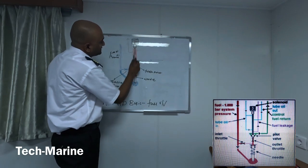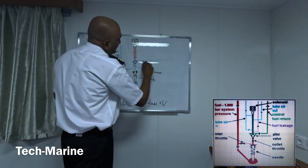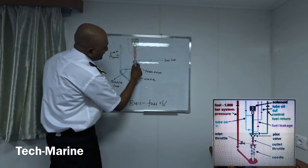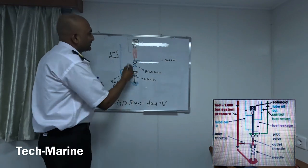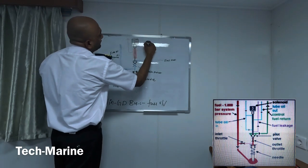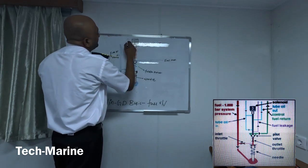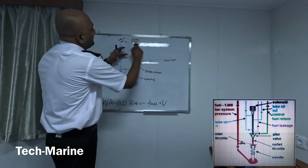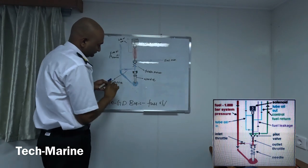Once the solenoid valve activates, the ball moves upward and the fuel is drained out - fuel out. When the fuel is drained from the top of the needle, the needle valve lifts and the fuel is injected. The red color line is the lube oil line - lube oil in and lube oil out - which is used to cool the injector.